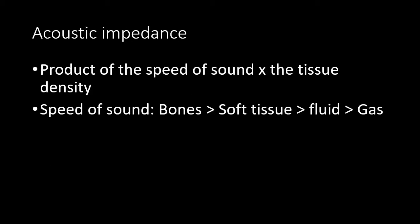Acoustic impedance is a physical principle defined as the product of the speed of sound — how quickly our ultrasound wave passes through the tissue — and the density of the tissue. It's interfaces between two tissues of different acoustic impedance that generate the echoes. Bone allows sound to pass very rapidly through it. Soft tissue is a little bit slower, fluid a little slower, and gas is the slowest. These interfaces, particularly between different types of soft tissue, are going to contribute greatly to our image.